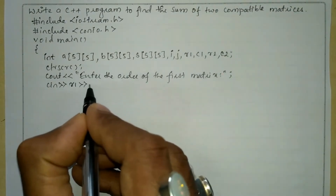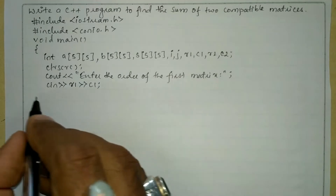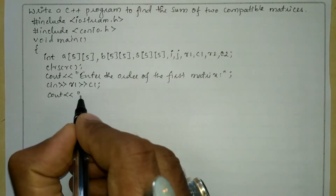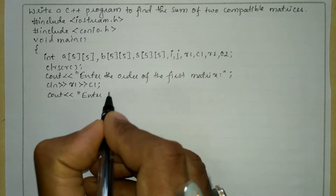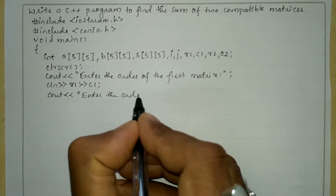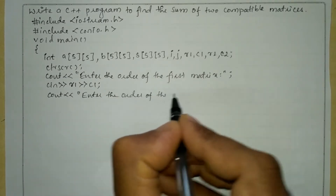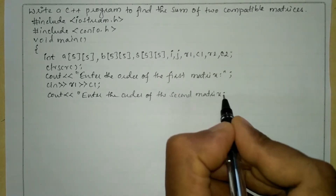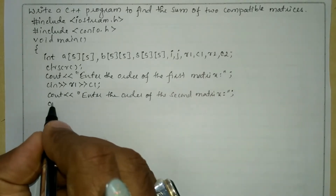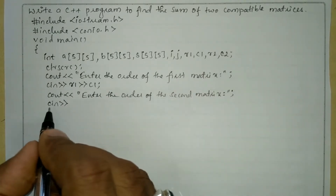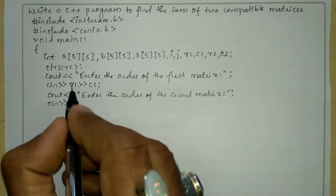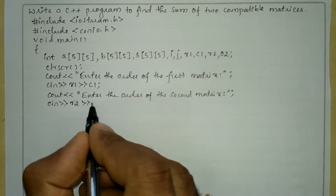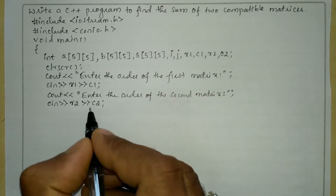R1 stream extraction operator C1 and then put semicolon. Next we will ask the user to enter the order of the second matrix: "enter the order of the second matrix". We are going to receive the response using cin stream extraction operator, taking R2 stream extraction operator C2 and then put semicolon.